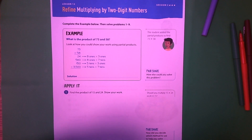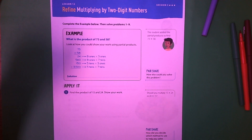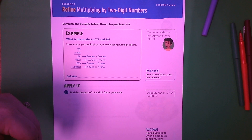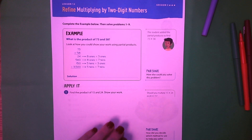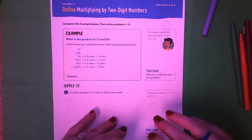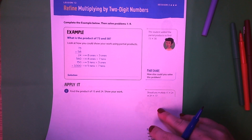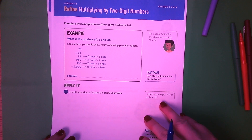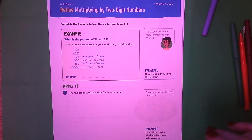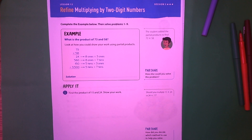Alright, this is lesson 12, session 3: multiplying by two-digit numbers. Students, this is the group of papers you need to complete first before you watch this video. So if you have not already, go ahead and complete pages 263, 264, 265, and 266. After you're done with those, then you can come back and watch this video.